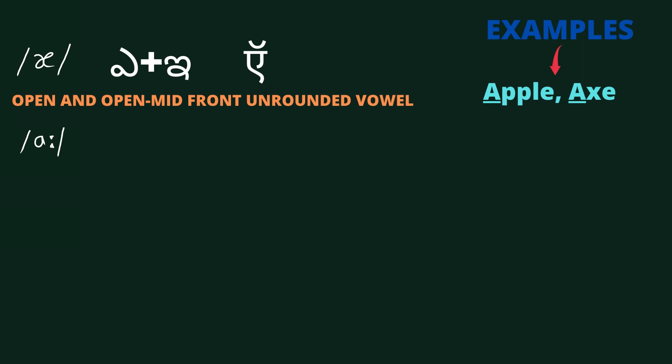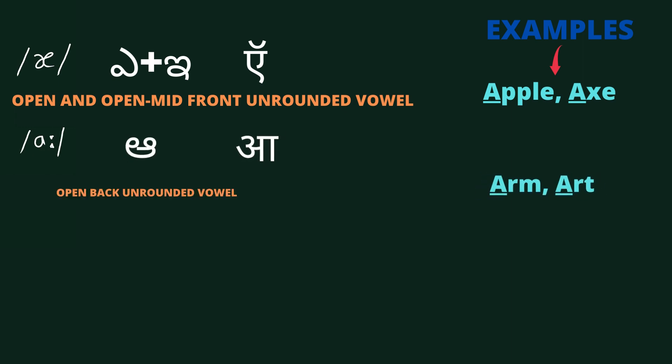Next we have /ɑː/. It is an open back unrounded vowel. Examples are: arm, at.